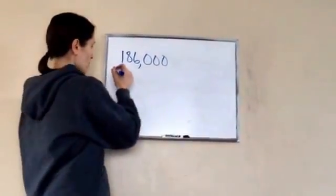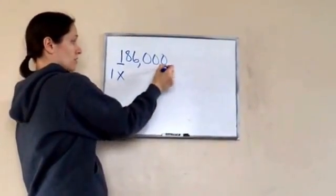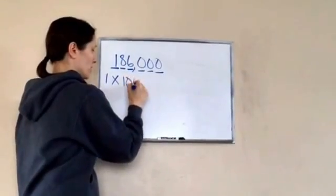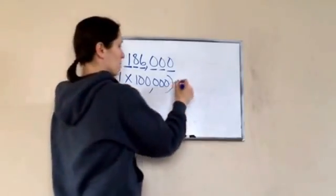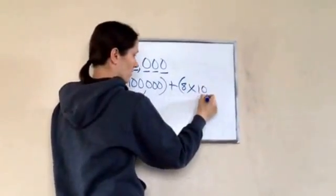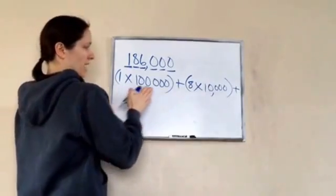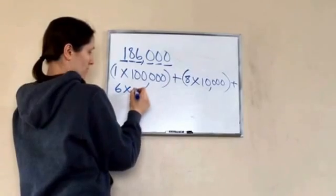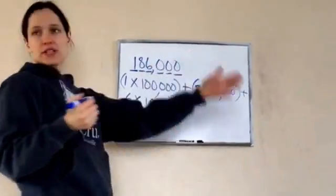1 times, what spot is that in? 100,000. That's our first one. Next one. 8. Plus. 8 times 10,000 because it's in the 10,000 spot. Plus 6 times 1,000. Very good. And then you don't do the rest. You don't do the rest because the rest is zero. They're not worth anything.